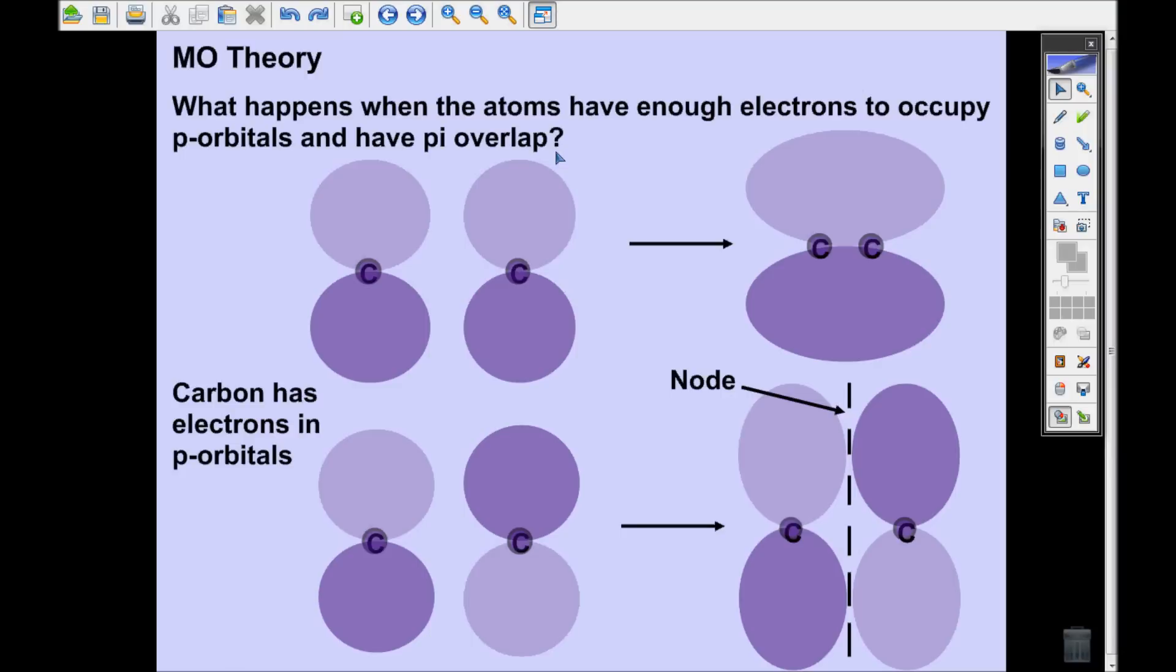What happens when you have atoms with enough electrons that they occupy some p orbitals? When p orbitals overlap, you can get some pi bonding because p orbitals can overlap side to side. I've tried to draw you some p orbitals here. I'm using carbon. Carbon is a relatively small atom and it has enough electrons to have some p electrons. Carbon is the whole basis of life and organic chemistry, so this is a good atom to look at.